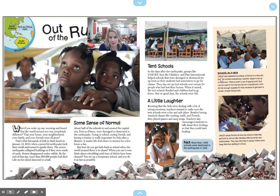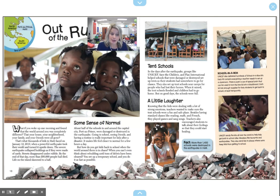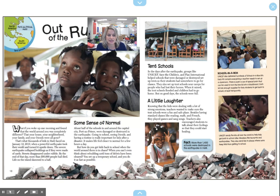We're going to read in this sidebar about 'School in a Box.' UNICEF also delivered hundreds of School in a Box kits. Each kit contains everything a teacher needs to set up a classroom. There's even a can of special paint that can be used to turn the box lid into a blackboard. Each kit has enough supplies for 40 students to get back into school, at least temporarily. UNICEF sends the kits all over the world to help kids get back to school after disasters like tsunamis and earthquakes, and also to places where there were wars and children couldn't get to school.